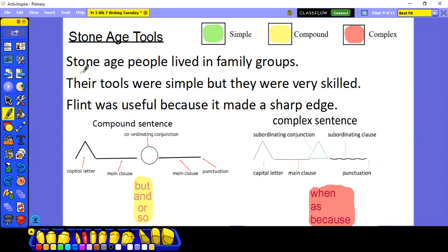So let's have a look. First sentence: Stone Age people lived in family groups. Any conjunctions there? No, I can't see any. Second sentence: Their tools were simple, but they were very skilled. Have you spotted the conjunction? Yes, but. Well done. Underline that one. And the final sentence: Flint was useful because it made a sharp edge. Spotted the conjunction? Because. Great. So, job one done. I have found the conjunctions and underlined them.